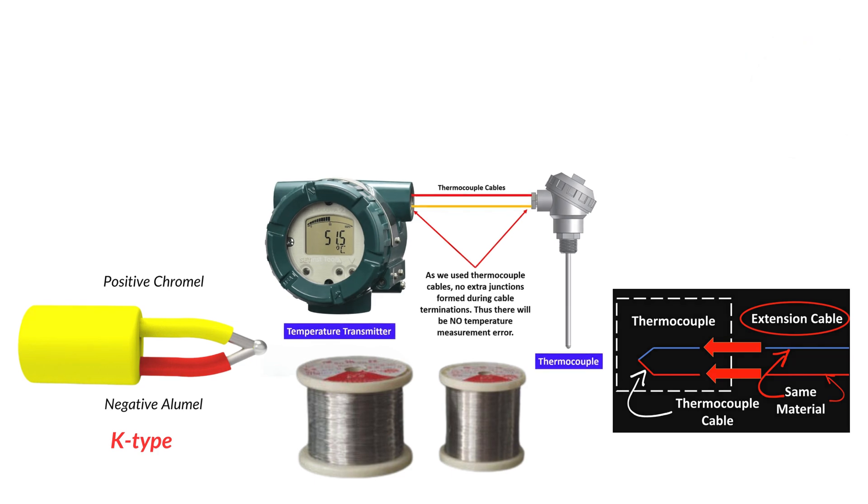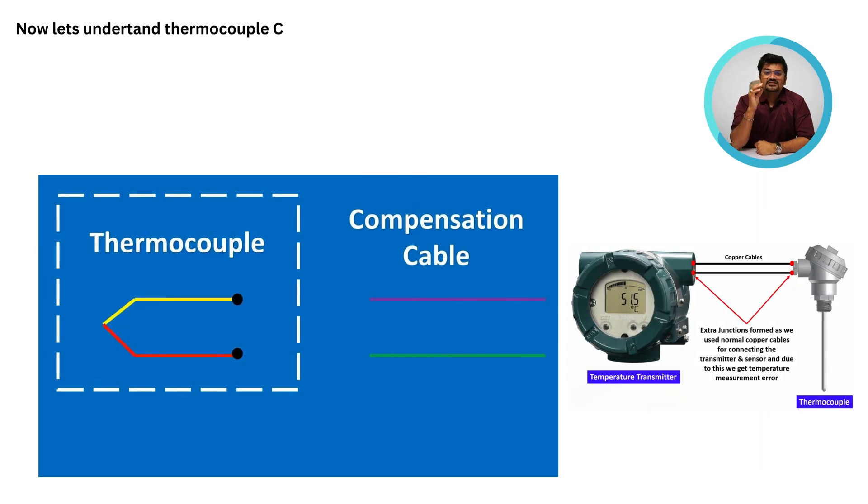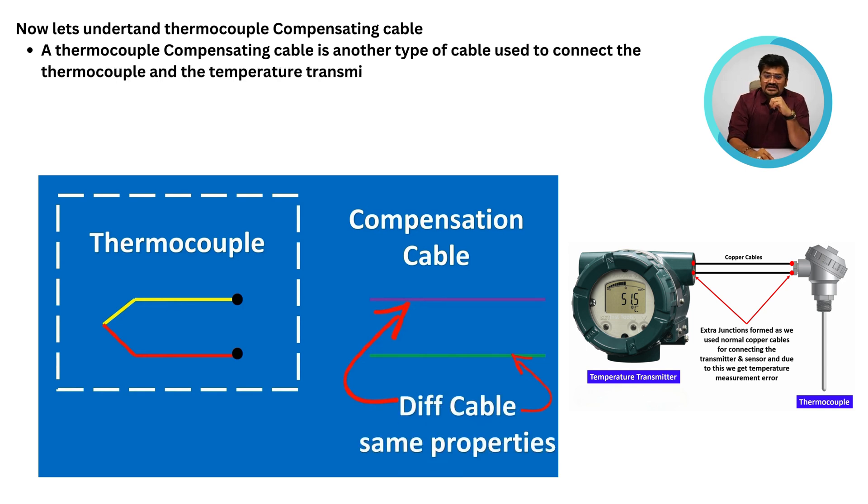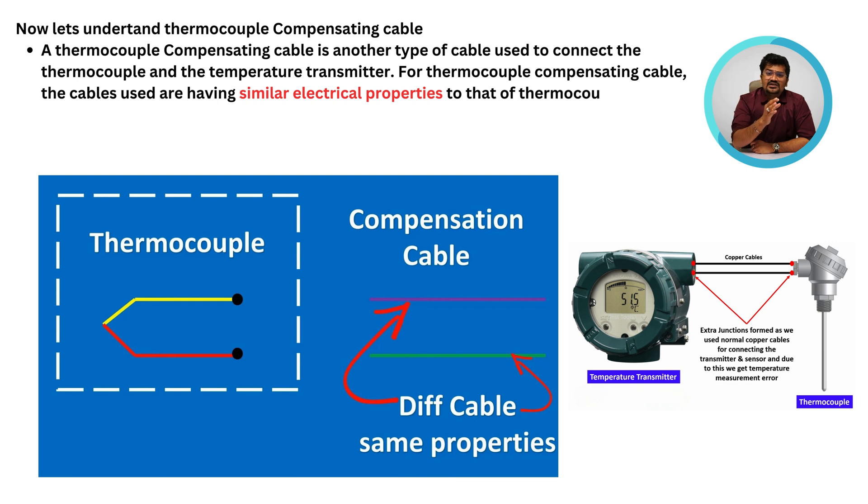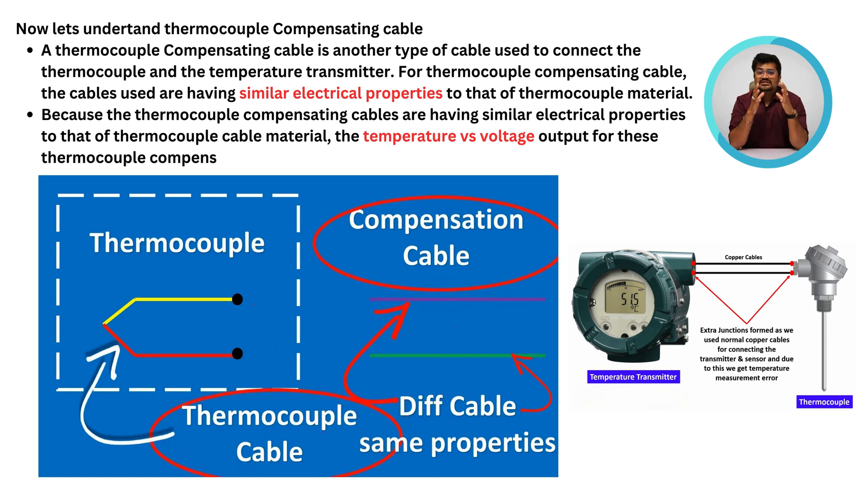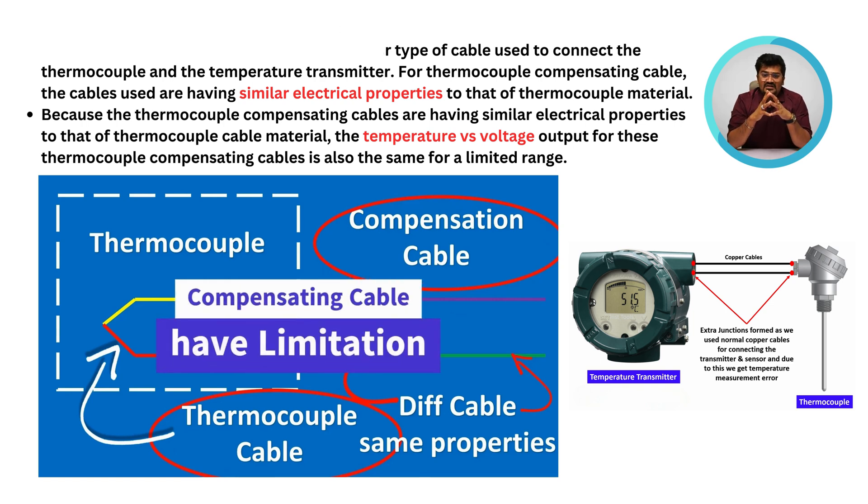Now let's understand the compensating cable. A thermocouple compensating cable is another type of cable used to connect the thermocouple and the temperature transmitter. For thermocouple compensating cable, the cables used have similar electrical properties to that of the thermocouple material. Because the thermocouple compensating cable has similar electrical properties to the thermocouple cable material, the temperature versus voltage output for this thermocouple compensating cable is also the same for a limited range.